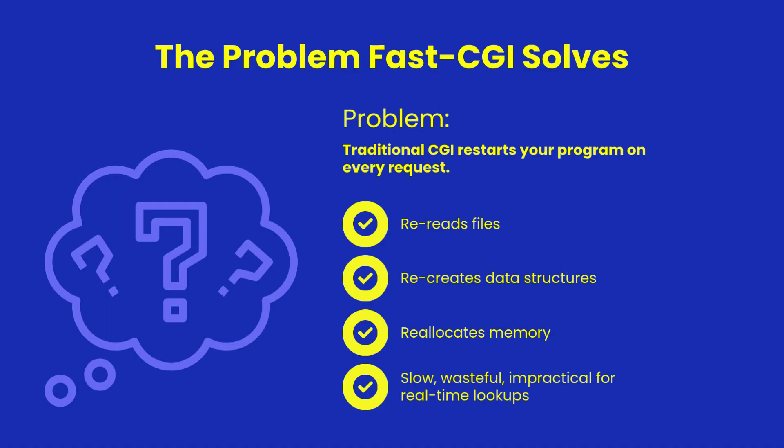In classic CGI, every request launches a brand new process. For a dictionary lookup, this is fatal — your program has to reopen files, re-read your data, rebuild clusters, and allocate all memory structures every single time. This works fine for small scripts, but not for interactive tools that need sub-millisecond responses. The overhead is simply too high.